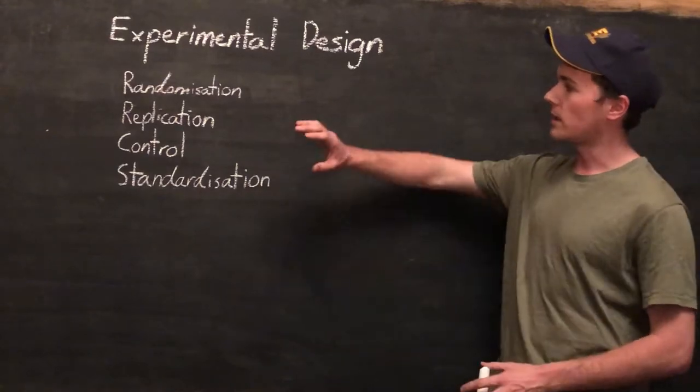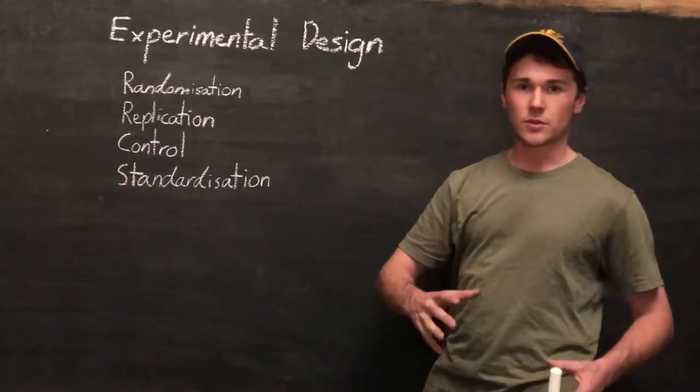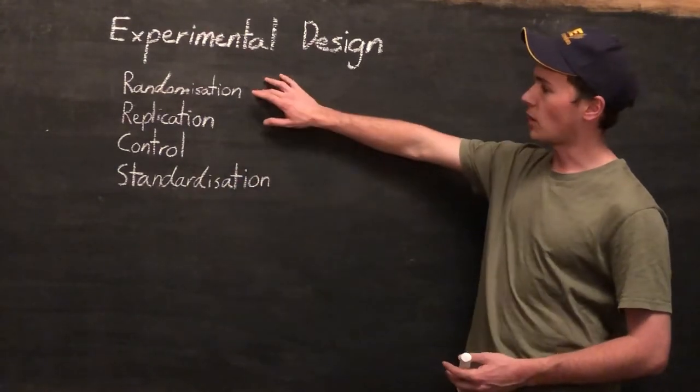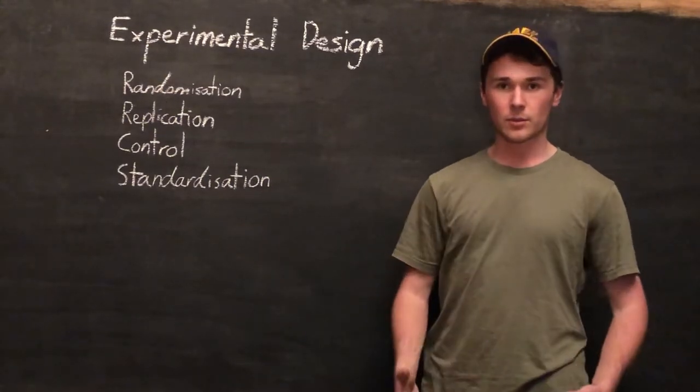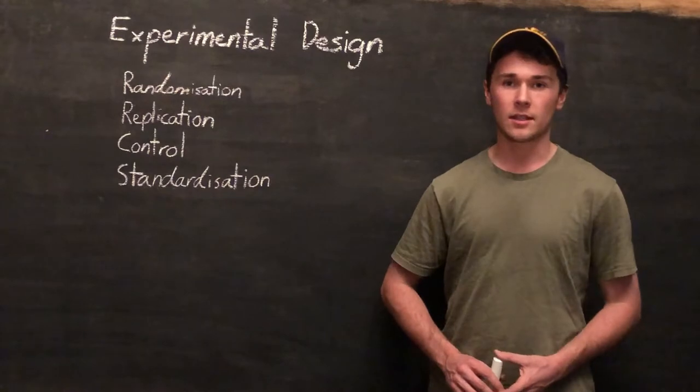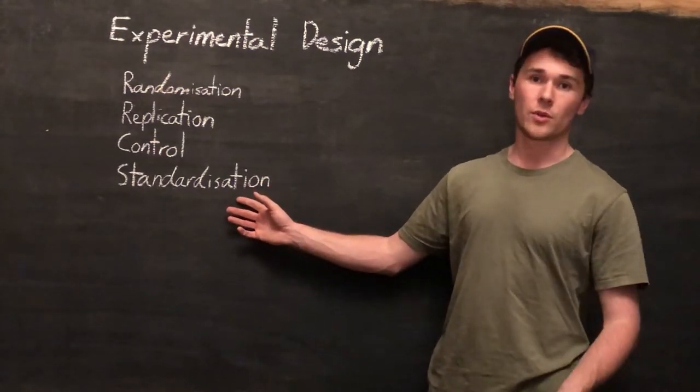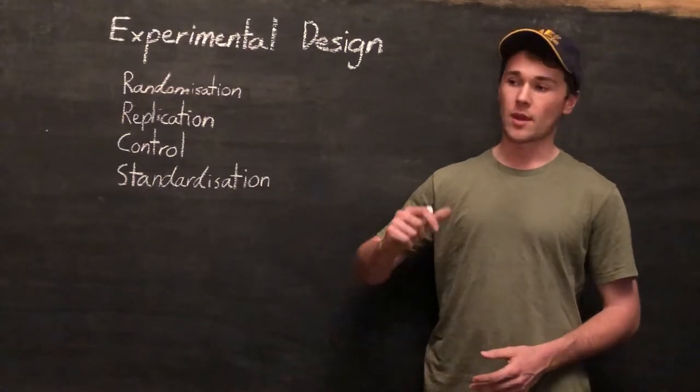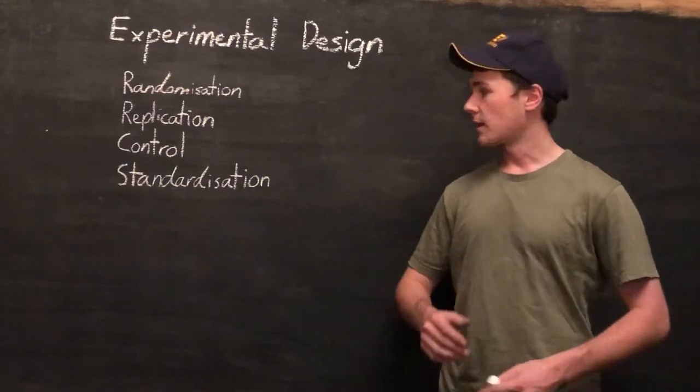So today in this video we'll be looking at some of the key principles in building an experiment. That is randomization, replication, control and standardization of variables. So when we design an experiment we want to make sure we have all four of these and that will make sure that our experiment will provide results that are both accurate and reliable.